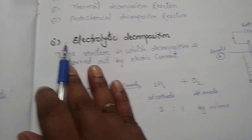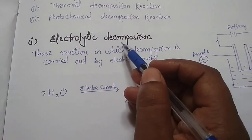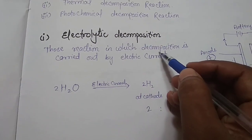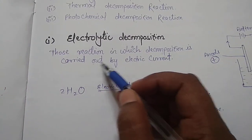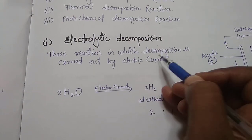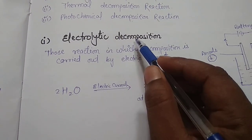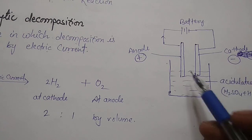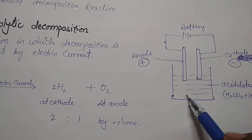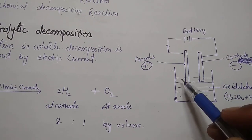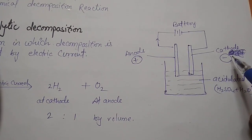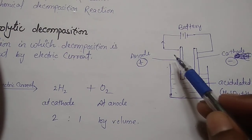Those reactions in which decomposition is carried out by electric current are called electrolytic decomposition reactions. To understand this, let's see this diagram. We have taken a beaker filled with water and placed two electrodes: one is the anode, which is positively charged, and another is the cathode, which is negatively charged. We then connect a battery.